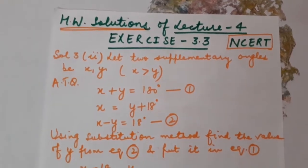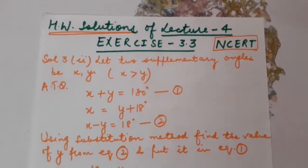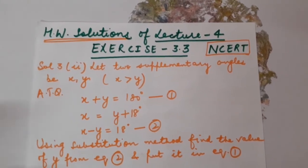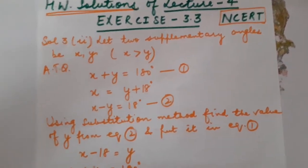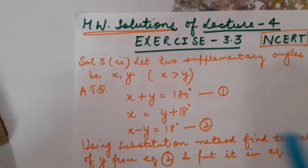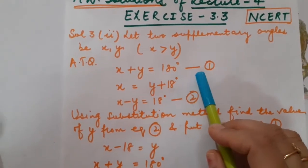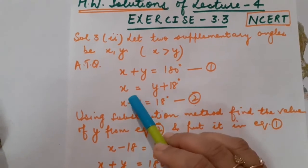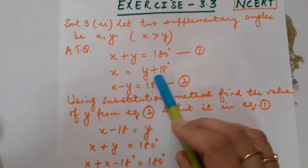Reading the statement: the larger of two supplementary angles exceeds the smaller by 18 degrees. Find both angles. Supplementary angles are those whose sum is 180 degrees. Let two supplementary angles be X and Y, where X is greater than Y. According to the question: X plus Y equals 180 degrees, and X equals Y plus 18 degrees, giving us X minus Y equals 18 degrees.